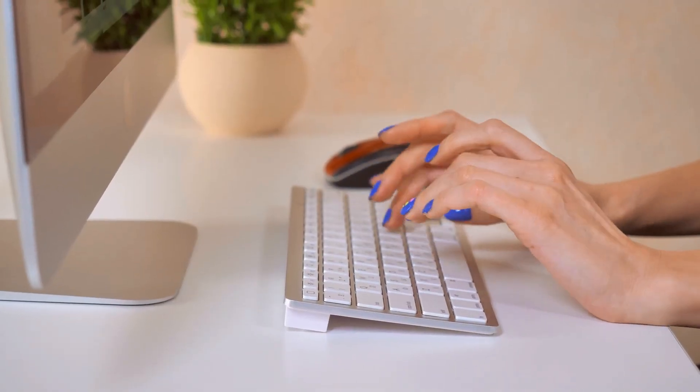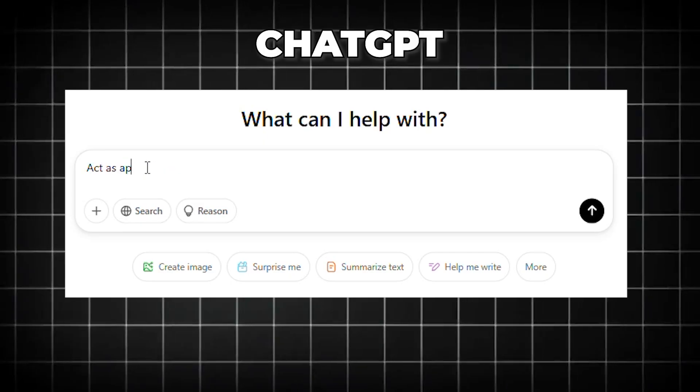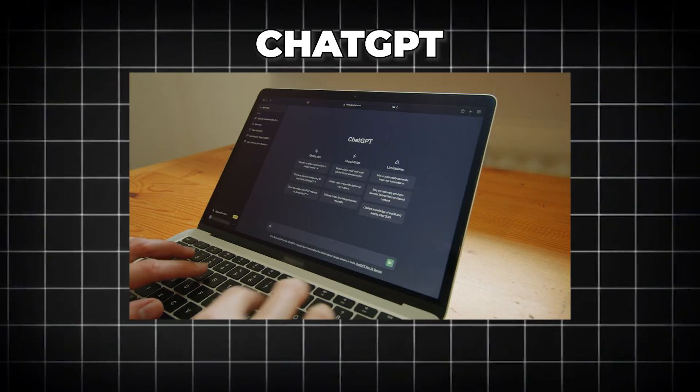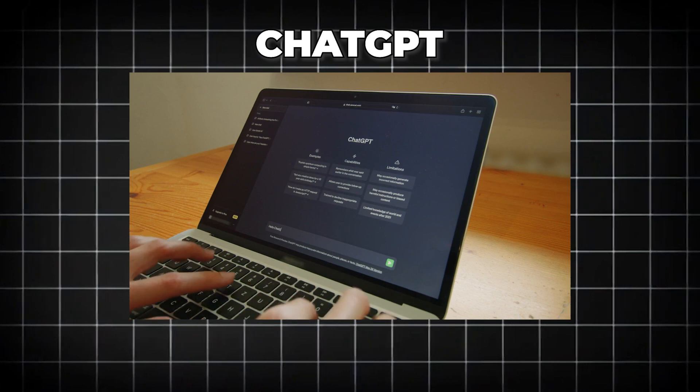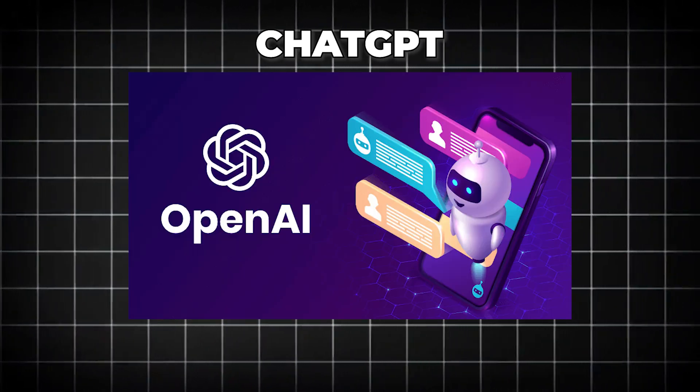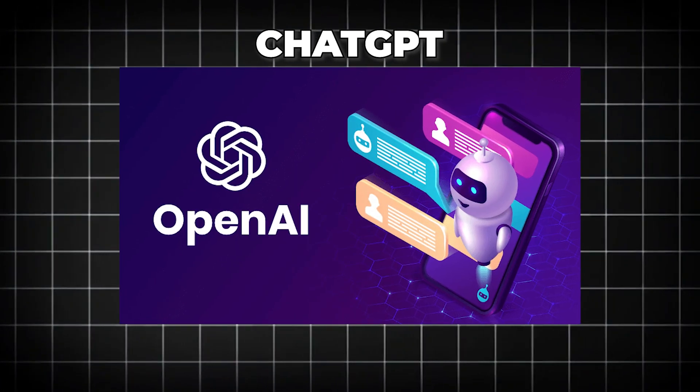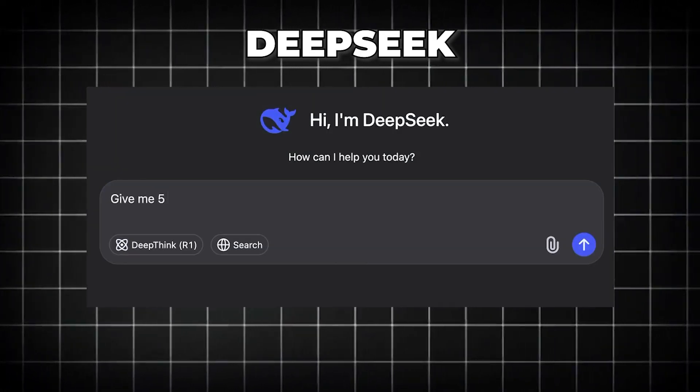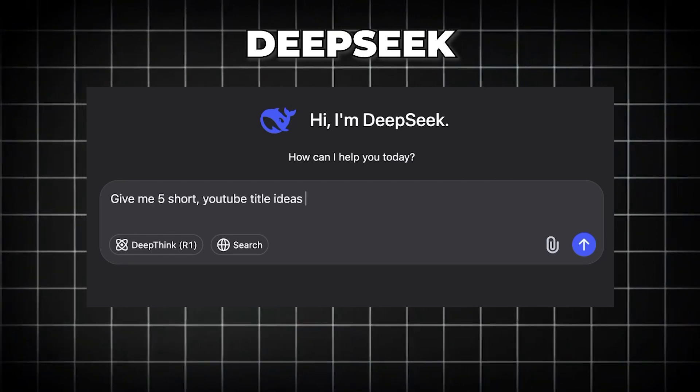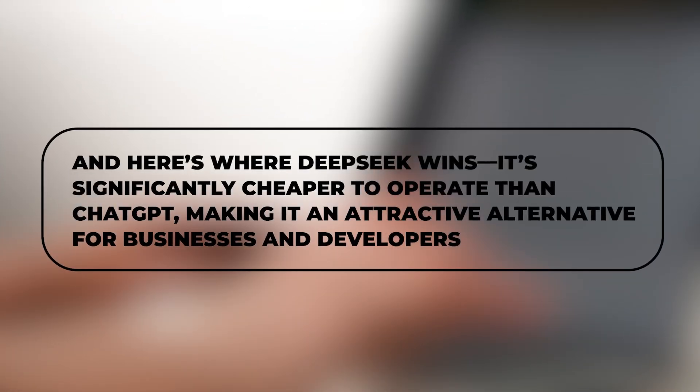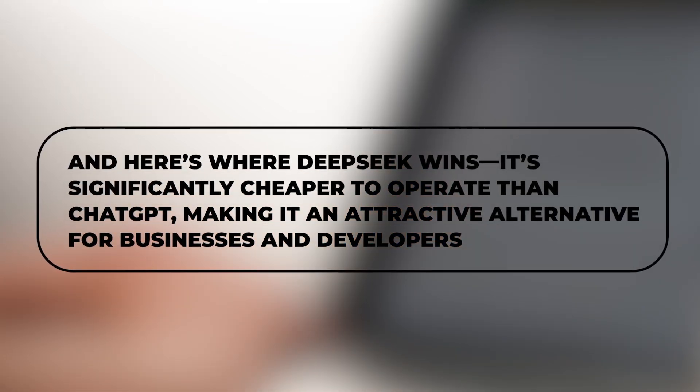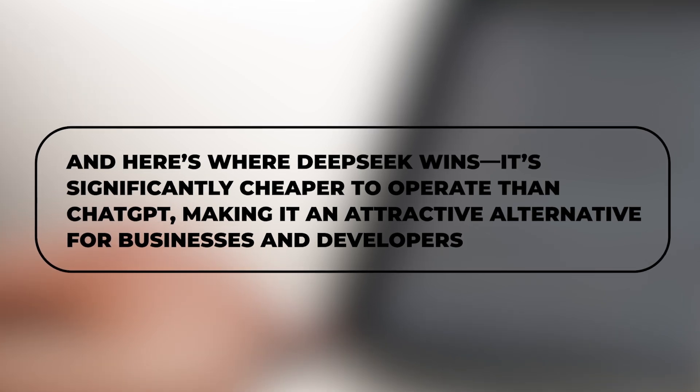Now let's talk about usability. ChatGPT offers a highly interactive, user-friendly chat. It remembers past conversations, supports voice input, and is backed by OpenAI's ever-evolving updates. DeepSeek is more minimalistic. You ask a question, you get a direct answer. No unnecessary fluff. So here's where DeepSeek wins: it's significantly cheaper to operate than ChatGPT, making it an attractive alternative for businesses and developers.